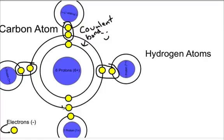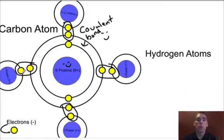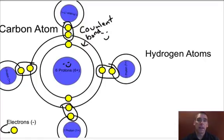And now what's happening is everybody — all these atoms — are happy. There are two electrons for each of the four hydrogen atoms, and that fills their first level, which can only hold two. Carbon has two in the first level, and then it has eight in the second level. So now it's happy as well.